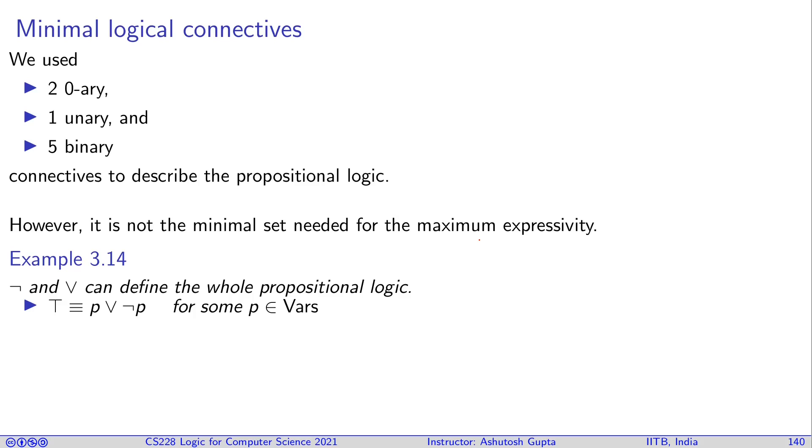You can see that I can define truth using p or not p. I can define false using not true. I can define conjunction using disjunction and negation—we saw this in the truth tables. We had XOR, which we defined in terms of conjunction, disjunction, and negation. We can have implication defined in terms of disjunction and negation, and similarly equals.